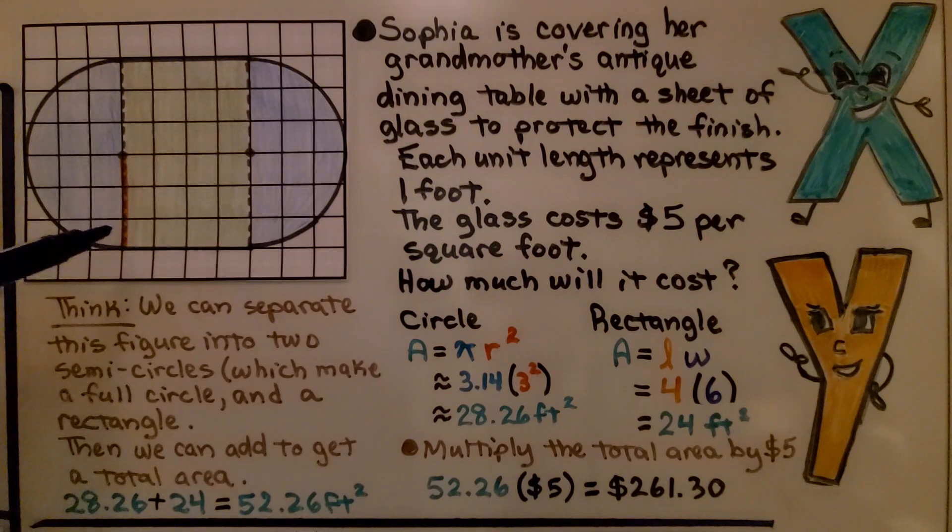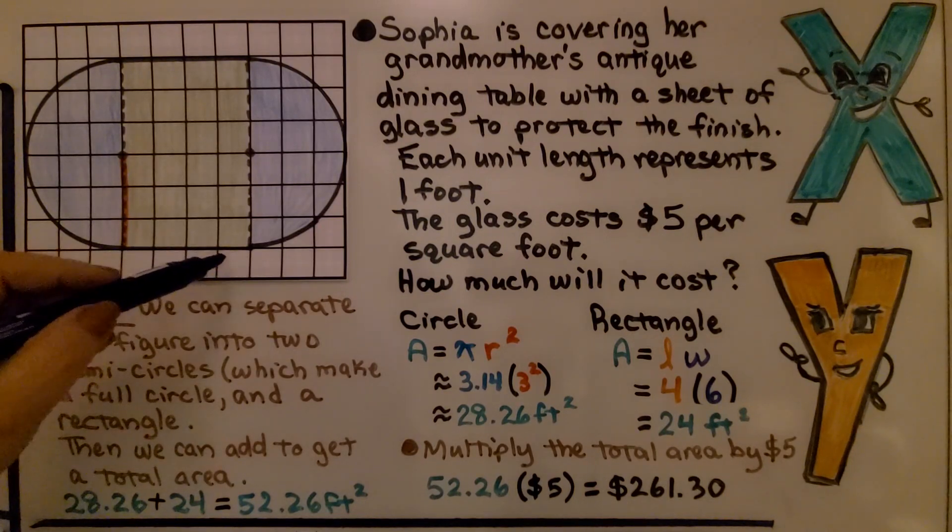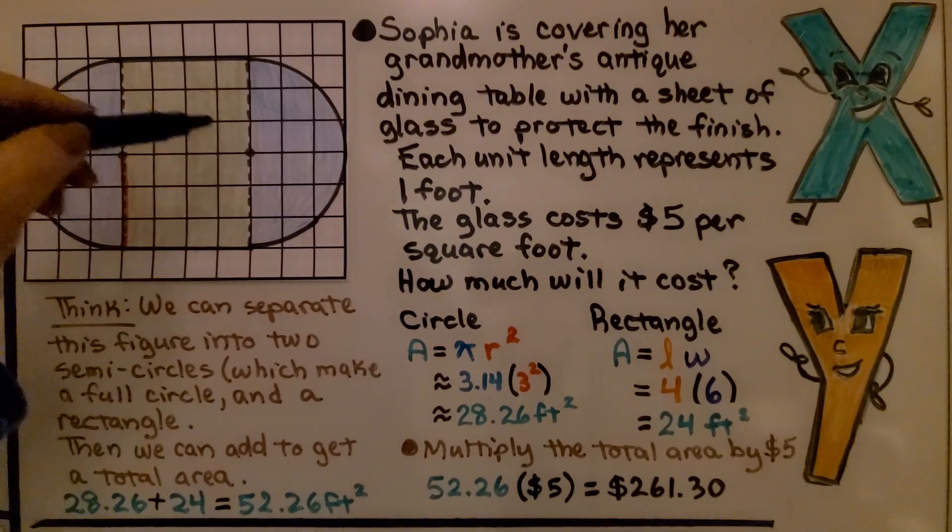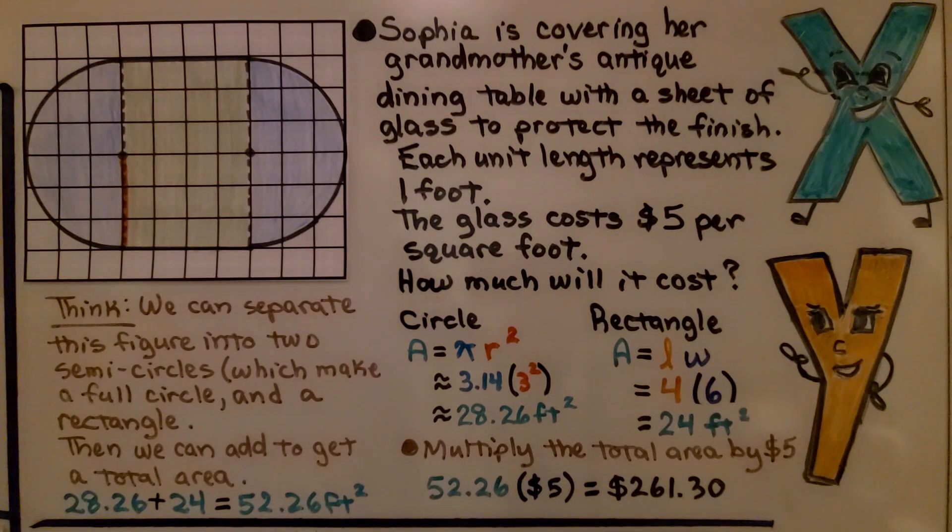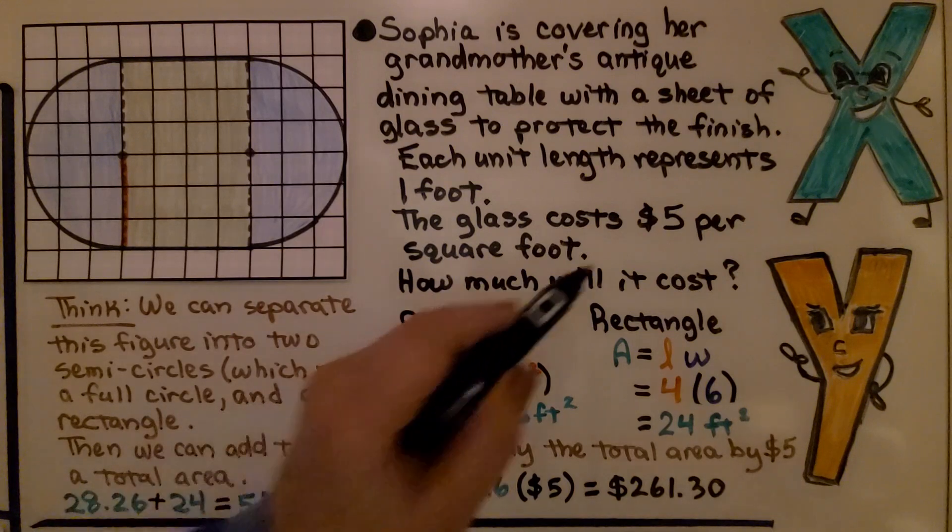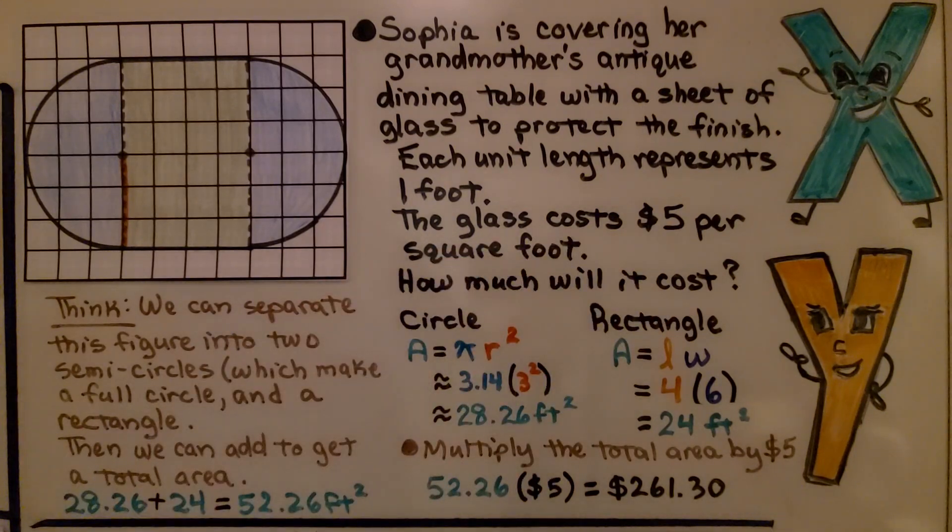Then for the rectangle, we can count 1, 2, 3, 4 times 1, 2, 3, 4, 5, 6. That gives us 24 feet squared. Now, we add them together, and we get 52.26 square feet. But we're not done. It's $5 per square foot. So we multiply the 52.26 times the $5, and we find out that the glass to cover the antique table is $261.30.